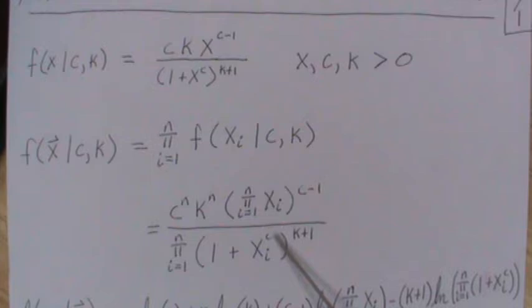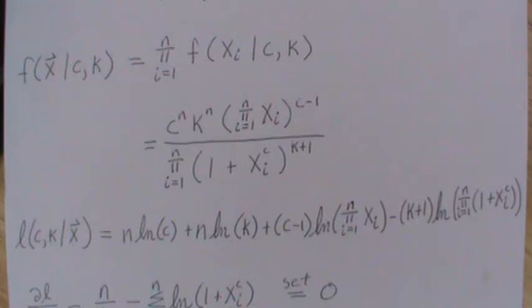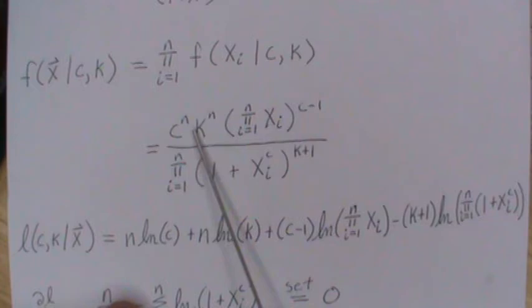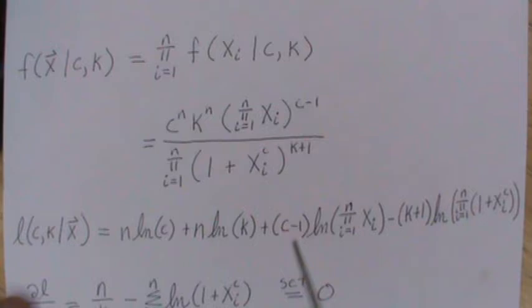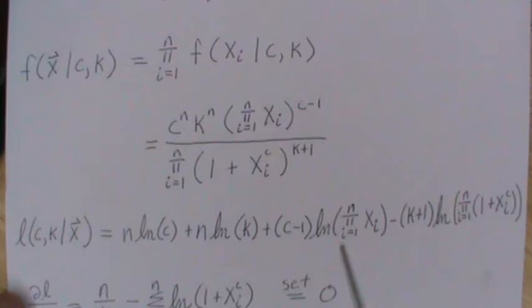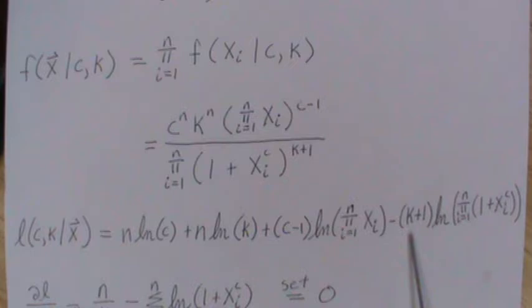Now let's take the log of this because that will be way easier to solve for maximum likelihood estimation. So the log likelihood is N log C, N log K, and the C minus 1 comes out log of this product. We'll switch that because the log of a product is the sum of the logs. Then it's minus the K plus 1 times the log of this. Again, the log of a product is the sum of the logs.